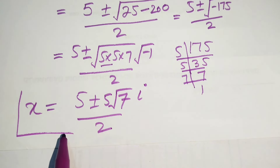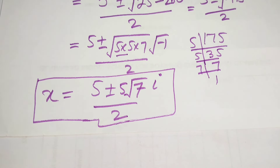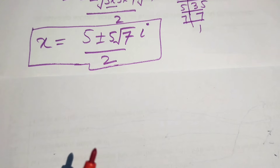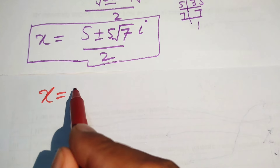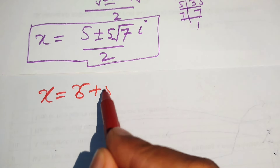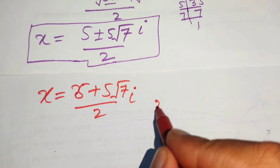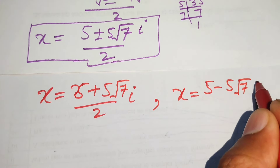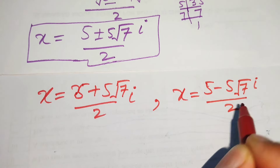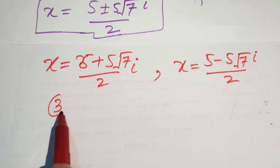These are the two complex values of x. From these two values of x we will find the corresponding values of y. The two values of x are: x equals 5 plus 5 root 7 iota divided by 2, and x equals 5 minus 5 root 7 iota divided by 2. Now we apply equation number 3.